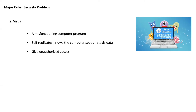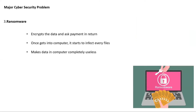Viruses can steal data and give unauthorized persons control over a computer. Third is ransomware — a cyber attack which encrypts data and demands payment to restore access. It can hold data hostage. Once ransomware gets into a computer, it starts to infect every file and eventually makes the computer completely useless. WannaCry is a well-known example of ransomware that affected thousands of computers worldwide.